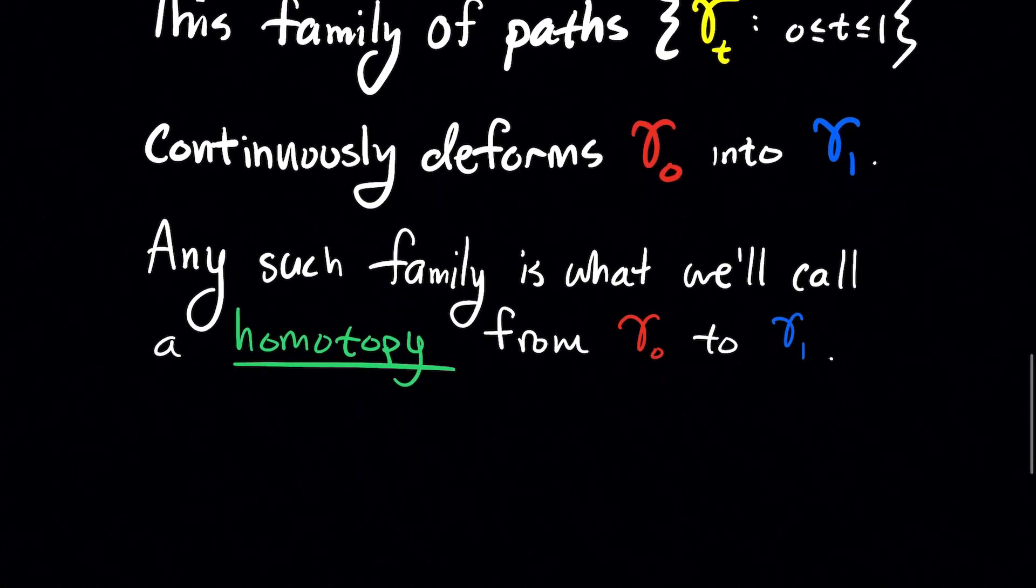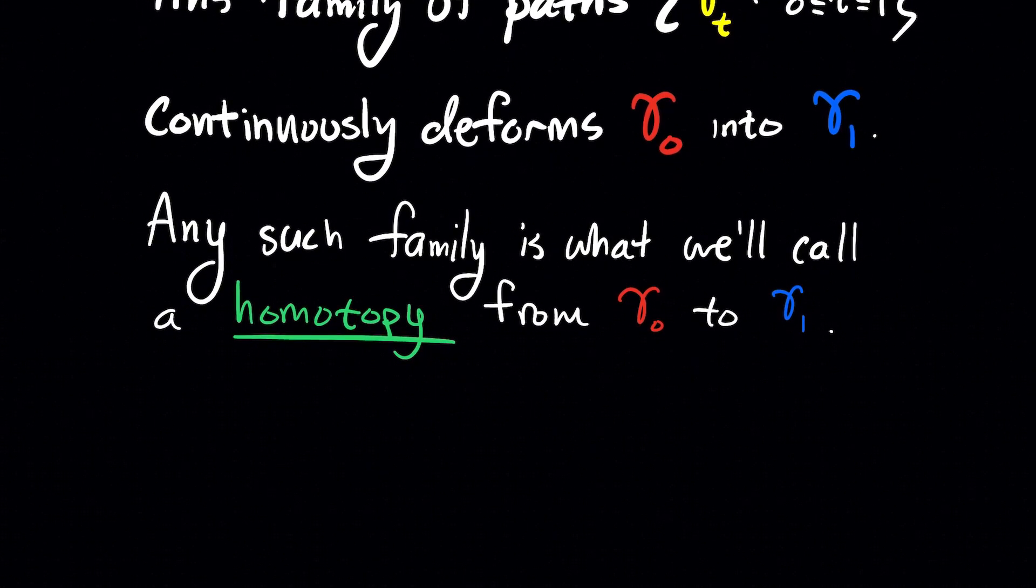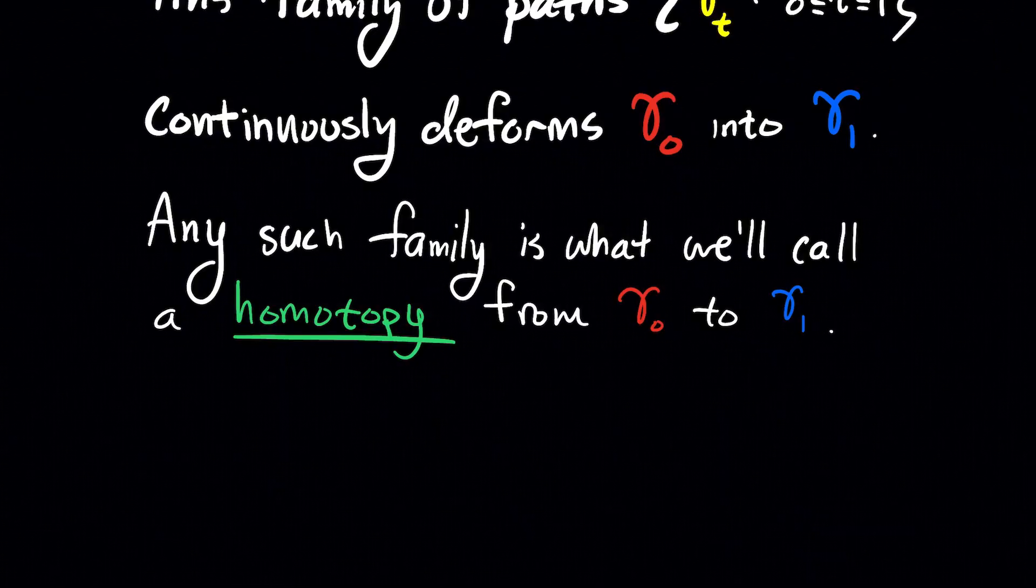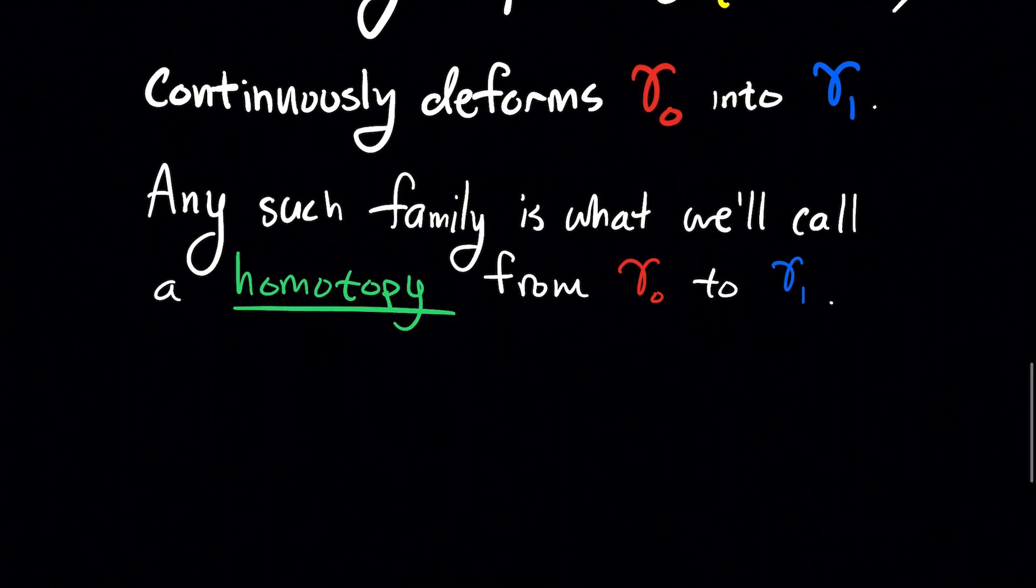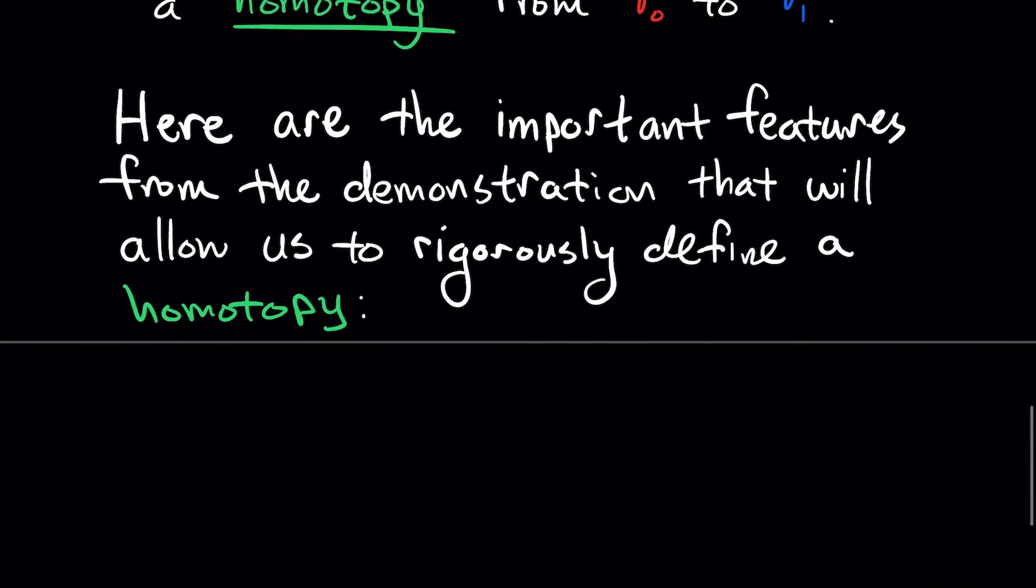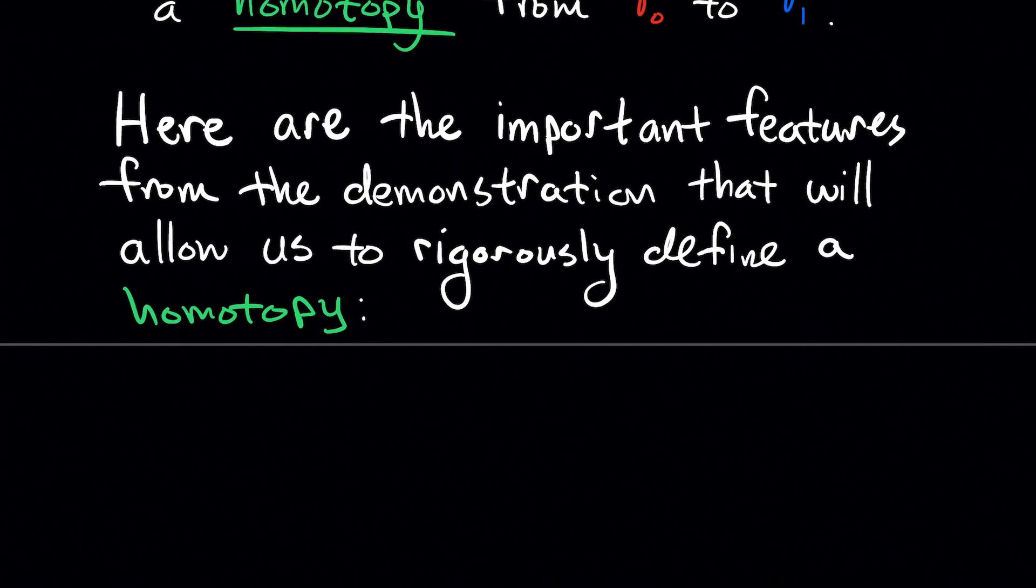Any such family is what we'll call a homotopy between gamma 0 and gamma 1, maybe specifically right now from gamma 0 to gamma 1. So here are the important features from the demonstration that will allow us to rigorously define a homotopy.